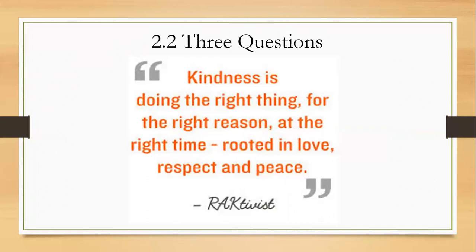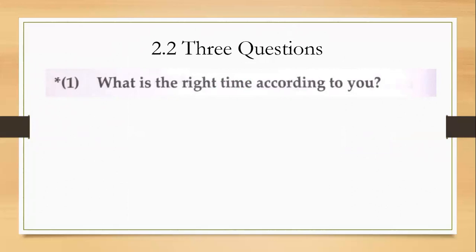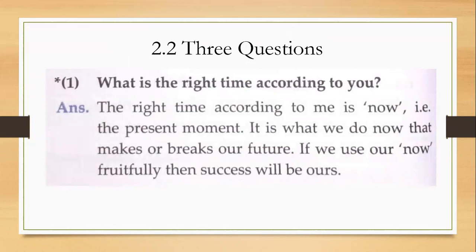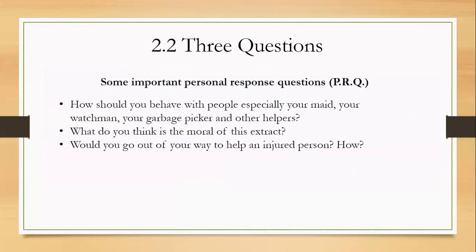Here we have quotes which can be used for personal response questions in the Three Questions. What type of questions can be asked? Examples include: 'What is the right time according to you?', 'What is the right place or person according to you?', 'What according to you is the right occupation?' — and so on, which are completely textual. These are the hand-picked questions for practice. You can also use the provided quotes in your answers to get a clear idea of how to use them in actual examinations.